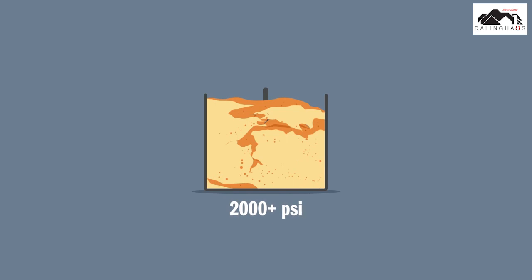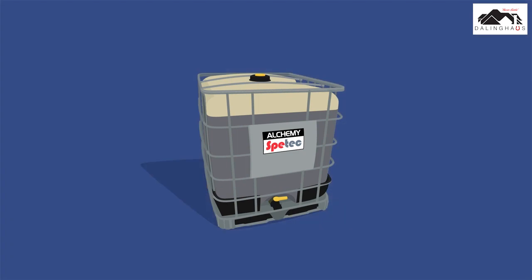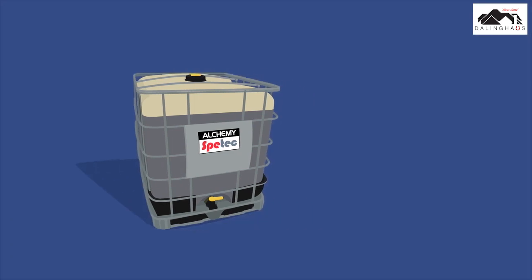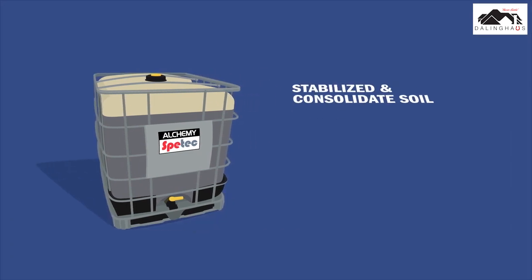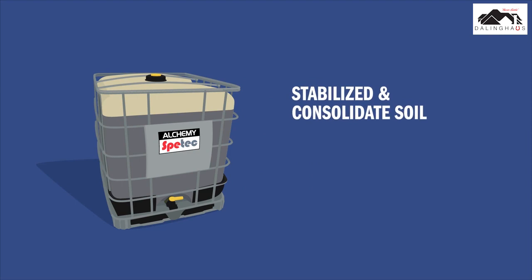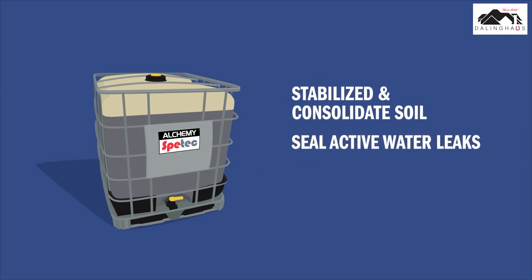Alchemy SpeedTech soil stabilization resins can achieve strengths over 2,000 PSI — that's almost as hard as concrete. Specialized contractors use our line of polyurethane and acrylate resin products to stabilize soil, seal active water leaks, and lift concrete slabs.